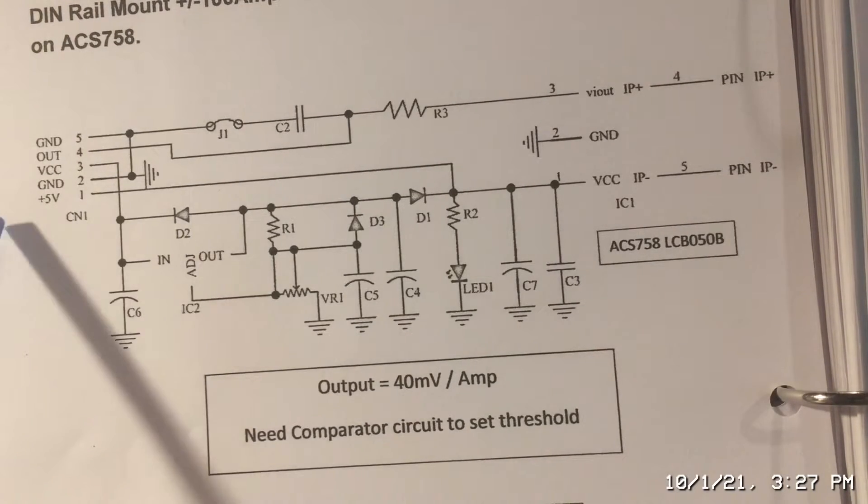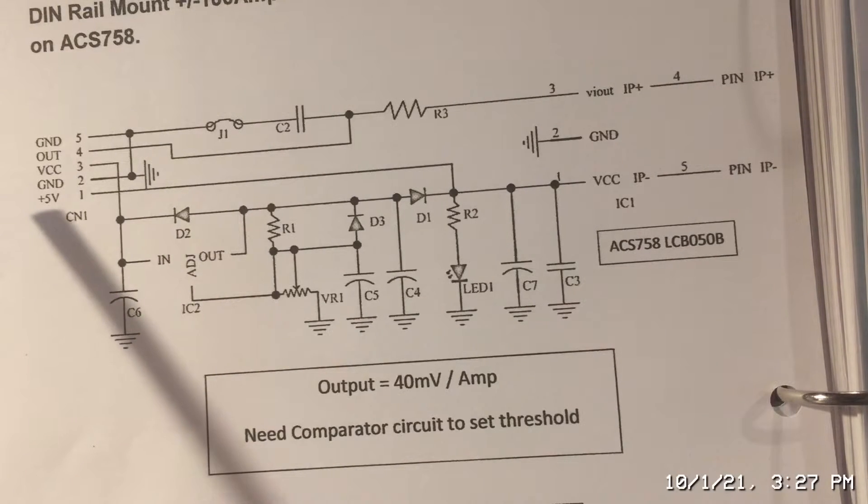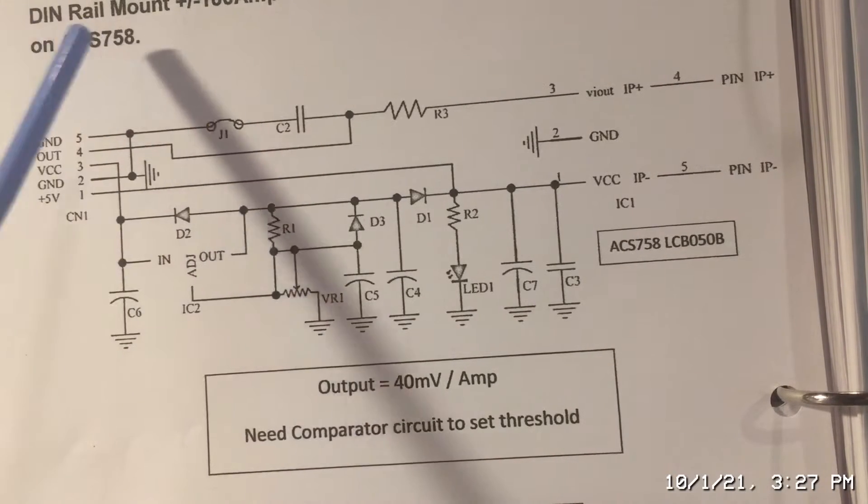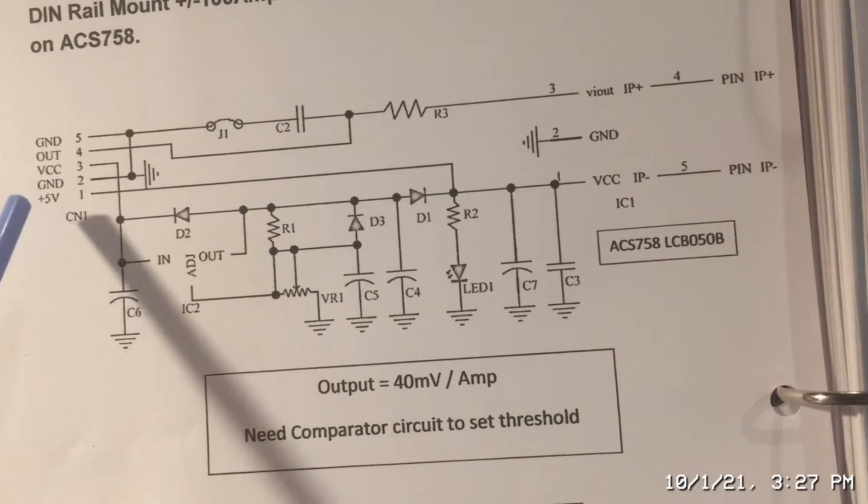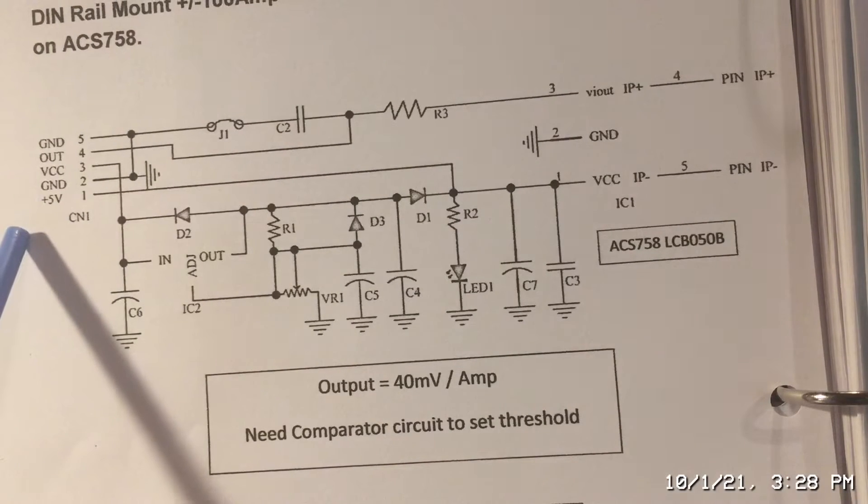And pin 1 is used for 5 volts so basically the circuit operates on 5 volts the ASC 758 also operates on 5 volts so you can use 5 volts directly.